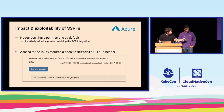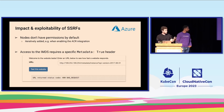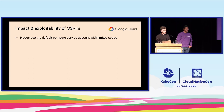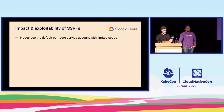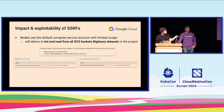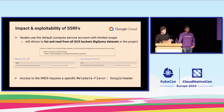For GCP, when you create a VM — and this applies to worker nodes — it uses the default compute service account with a limited scope, but this scope does include devstorage.readonly, which means you can read all GCS buckets and BigQuery tables. That's where your data is. GCP also requires a specific header to call the metadata service.